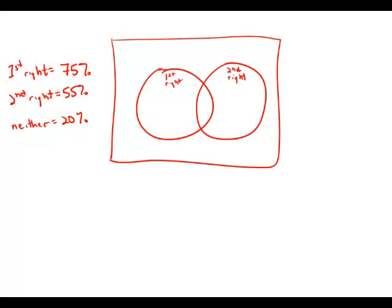I'm going to do this with a Venn diagram. The entire first big circle is 75%. I'm not going to write 75% in this diagram just yet because it will be confusing with the overlapping regions. The big second circle has 55%. And out here, outside of the two circles, is 20%. That means inside all of this area would be 80%.